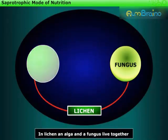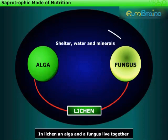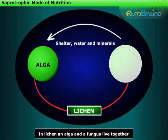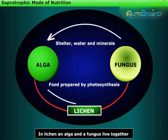In lichen, an alga and a fungus live together. Here, the alga is the chlorophyll-containing partner, which receives shelter, water, and minerals from the fungus. In return, the alga provides food prepared by photosynthesis to the fungus.